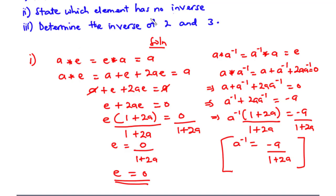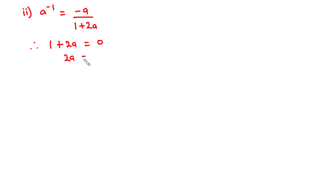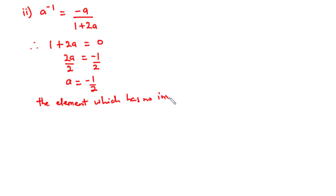Now for part (ii), we state which element has no inverse. We found a-inverse equals negative a over (one plus 2a). To find the element with no inverse, we equate the denominator to zero and solve for a. Setting one plus 2a equals zero, transposing gives 2a equals negative one, so a equals negative one over two. Therefore the element which has no inverse is a equals negative one-half.